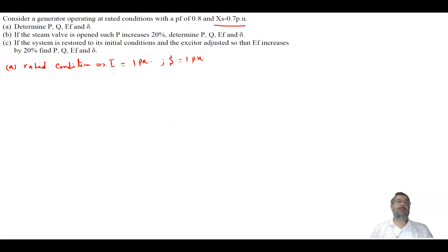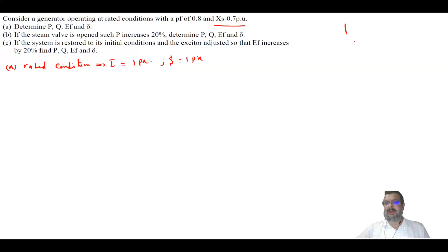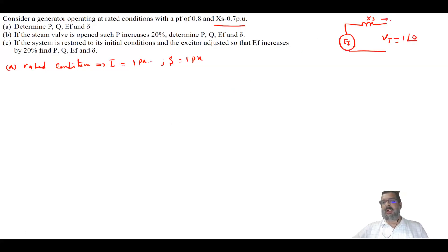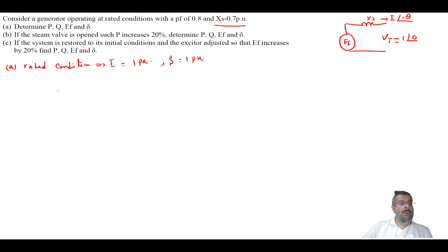We need to find P, Q, the internal generator voltage, and the torque angle. The model we use has internal voltage EF, reactance Xs, and terminal voltage Vt. We assume Vt equals 1 at angle zero — the rated voltage. The current has power factor 0.8, and since it's not stated, we assume it's lagging, so the angle is minus theta.